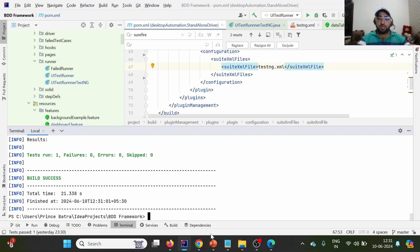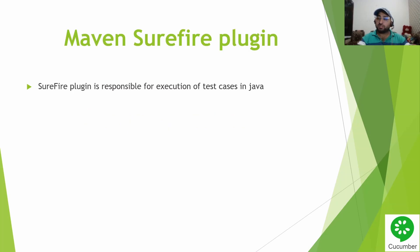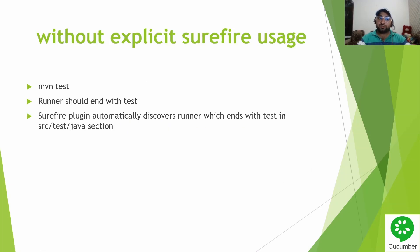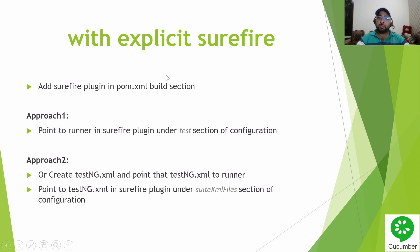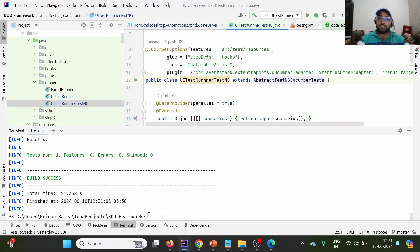To recap: we discussed how to execute test cases using Maven and the purpose of using Maven for execution. The Surefire plugin is responsible for test case execution. First, we covered executing without explicitly providing the Surefire plugin in the pom.xml. Then we covered two approaches for explicitly providing Surefire: one by providing the runner in the test section, another by providing the TestNG XML in the suiteXmlFiles section. In the next lecture, we'll discuss how to pass Cucumber options through Maven commands on the fly. Thank you for watching - please like, share, and subscribe.